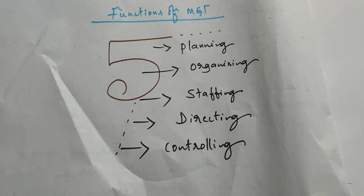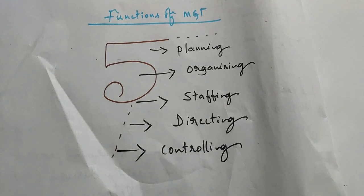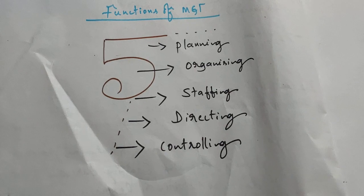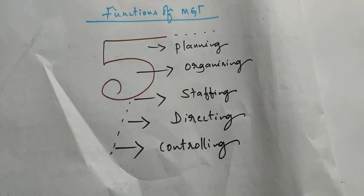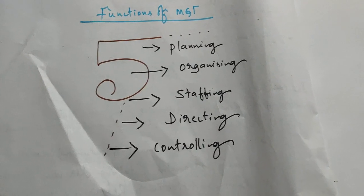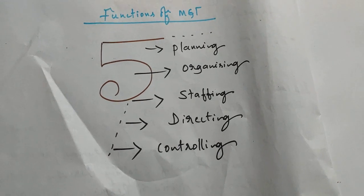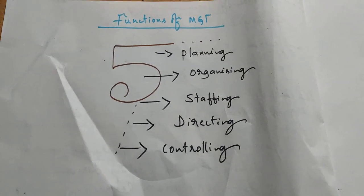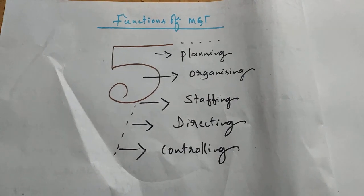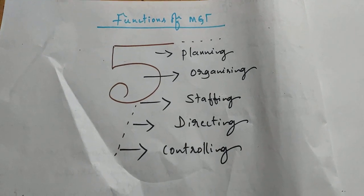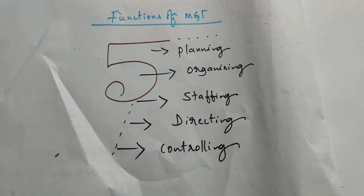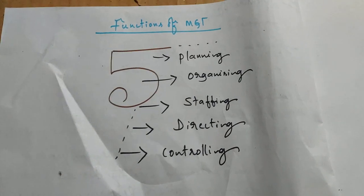We can accomplish a task without management, but it may require more time and more budget. To minimize time and cost, we need management. The necessity of management relates to two aspects: to increase efficiency and effectiveness of any function, process, or activity. The five functions of management are easily remembered as POSDC — P for planning, O for organizing, S for staffing, D for directing, and C for controlling.